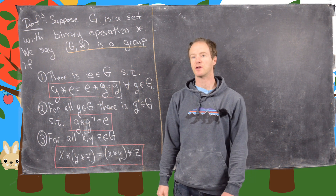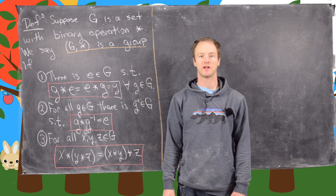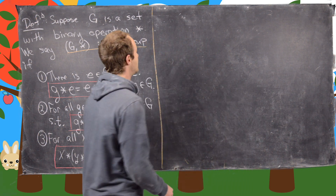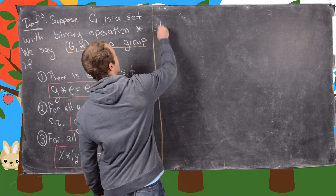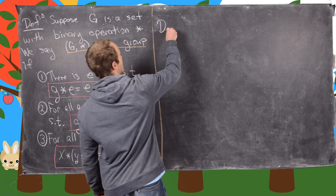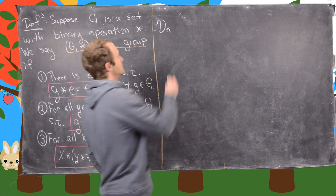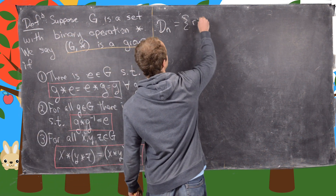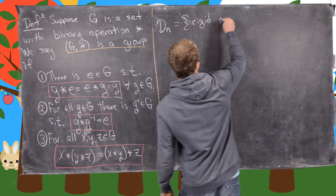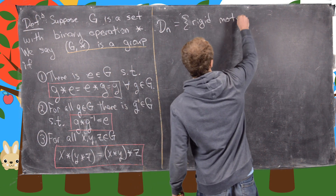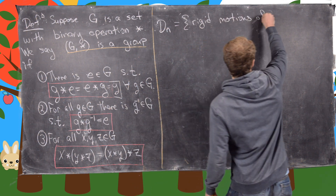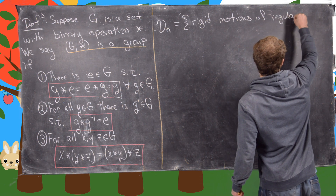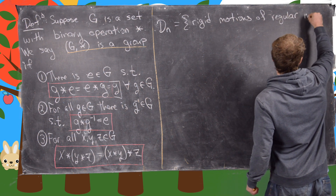In this video, I want to look at a special class of groups known as dihedral groups. Those are rigid motions of n-gons, and they're denoted by D_n. So this is the group of all rigid motions of a regular n-gon.